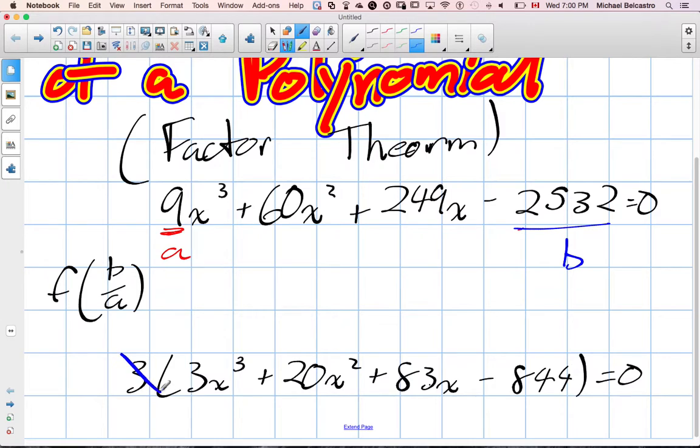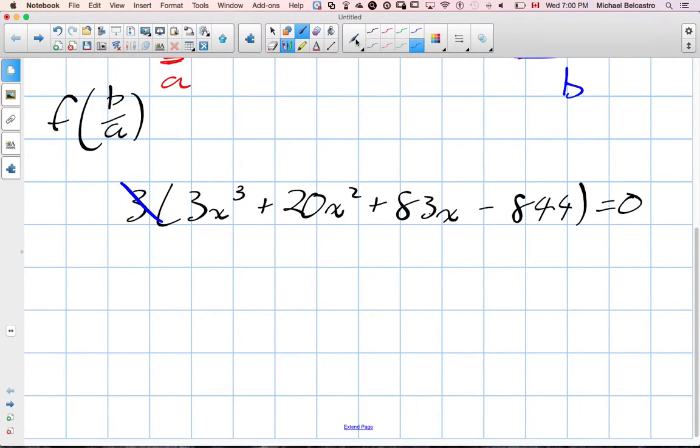Because it equals 0, this 3 essentially drops off and we're left with this. So these are our values - this is our new a and our new b. So we need to find factors of them, and luckily they've written out a bunch of factors.